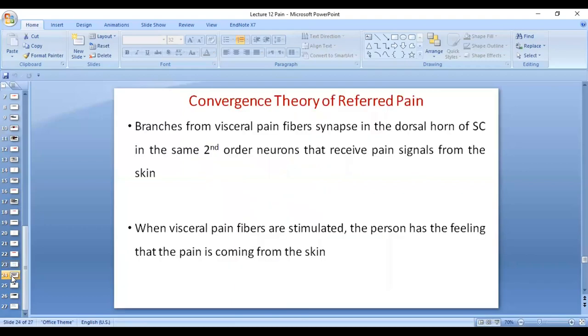So the mechanism of referred pain, we call it a convergence theory of referred pain because the fibers converge in the second-order neuron, the pain pathway, in the dorsal horn of spinal cord.